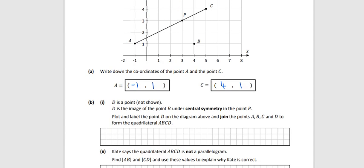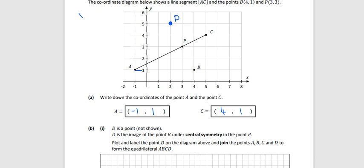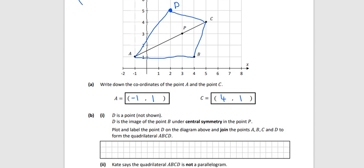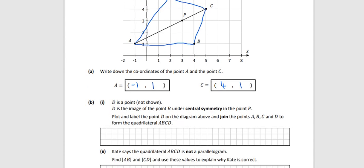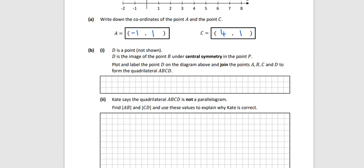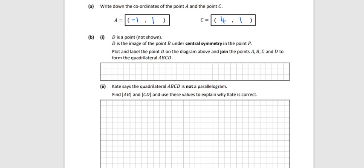It says the quadrilateral ABCD is not a parallelogram. Obviously it doesn't look like one. To be a parallelogram, the opposite sides have to be equal length, and the opposite angles are equal as well. We have to prove it though. We need to show the distance from A to B, so we're going to use the distance formula twice.